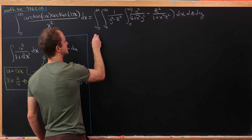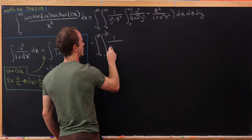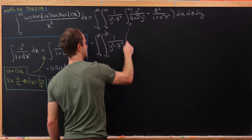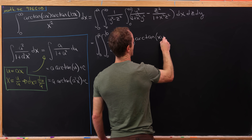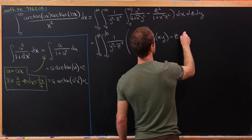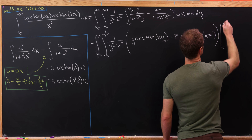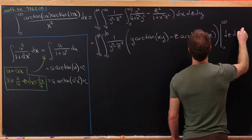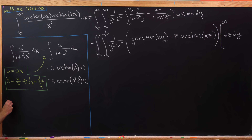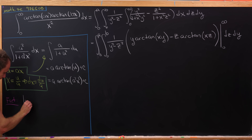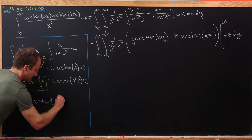Plugging that in for the innermost integral, we've got the integral from 0 to a, the integral from 0 to b, and still the 1 over (y squared minus z squared) term. Now we have y times arctan of xy minus z times arctan of xz, evaluated from 0 to infinity, then dz dy. Recall that the limit as t goes to infinity of arctan of t equals pi over 2, since tangent has an asymptote at pi over 2.